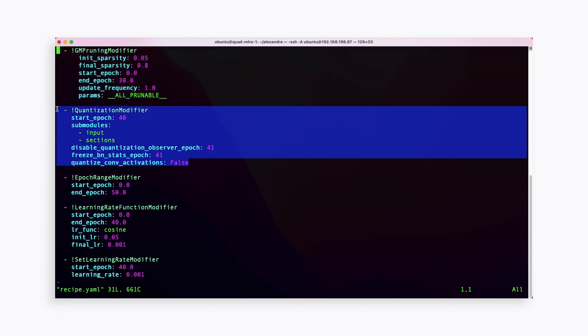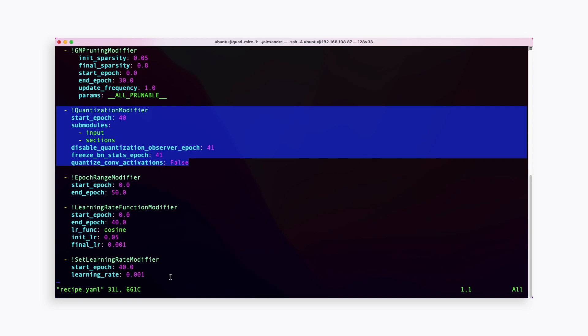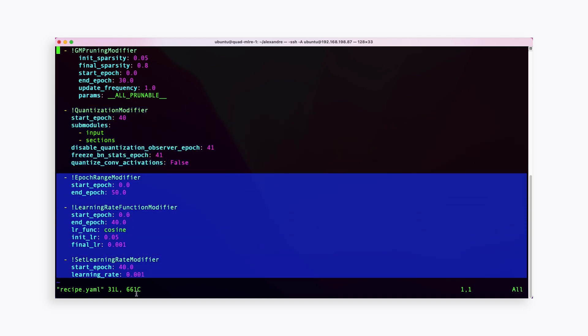We're also using a quantization modifier, which will quantize the model at the end of the fine-tuning process. Note also that we support other kinds of modifiers to easily control the training process, such as learning rate modifiers and weight decay modifiers.